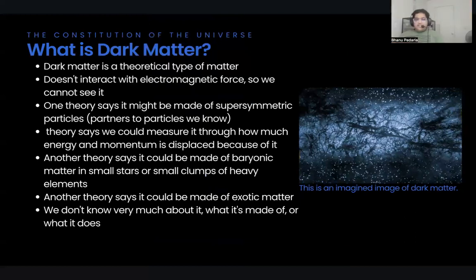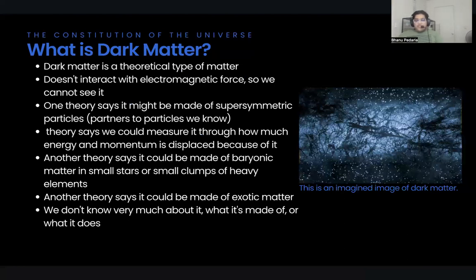What is dark matter? It makes up 30% of the universe, but we can't detect it, which is why its name is dark matter. We can't detect it in a normal way, but there is a theory that it might be made of supersymmetric particles — particles that we already know. One way theorized to detect this matter is through gravitational waves.